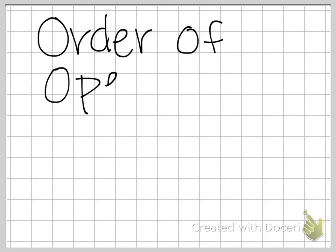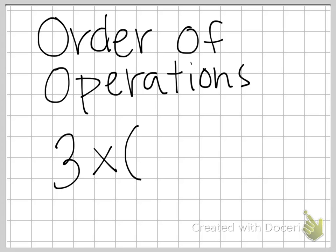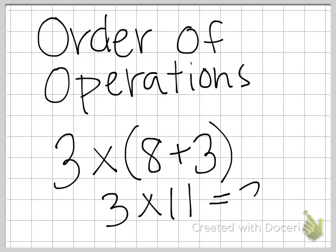Okay, order of operations. So let's do another one. Let's do 3 times 8 plus 3. So let's look at this. 3 plus 8 is 11. And then 3 times 11 is 33.